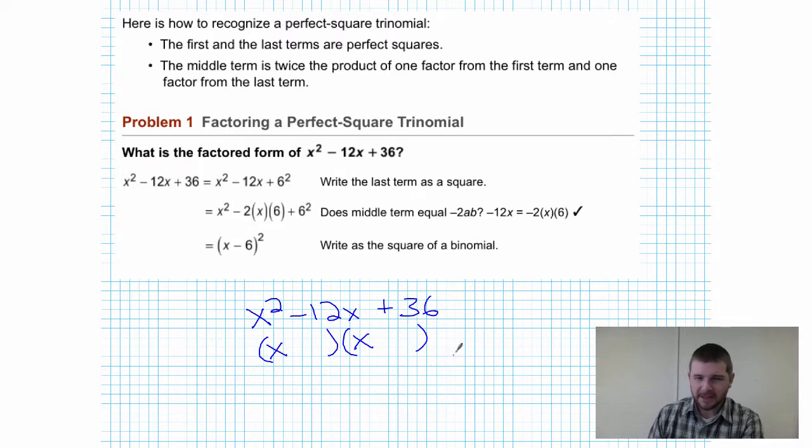Factors of 36 that when added equal negative 12... much as we'd expect in problems like this, our binomials are designed to match, so (x - 6)² is the proper way to write the factored form of this trinomial.